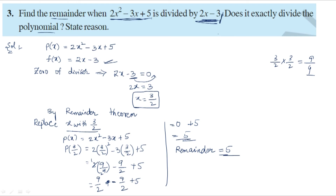So we got the remainder as 5. Next, does it exactly divide the polynomial? No, because we got remainder 5. If the remainder were 0, the polynomial would be exactly divided. Since the remainder is 5, it does not exactly divide the polynomial.